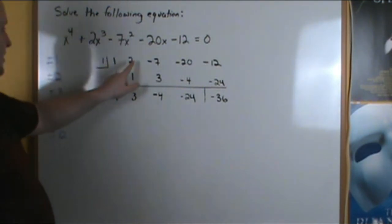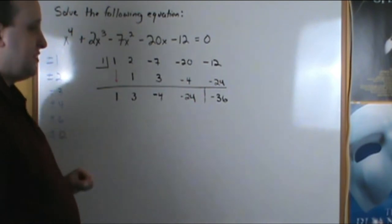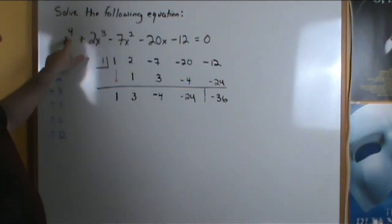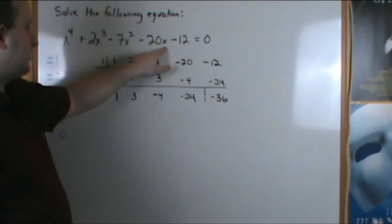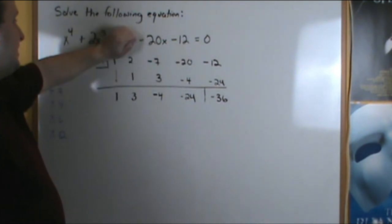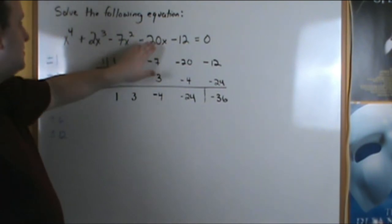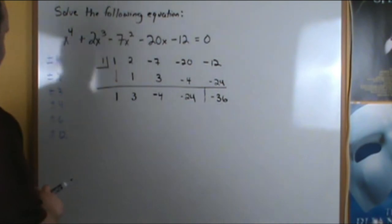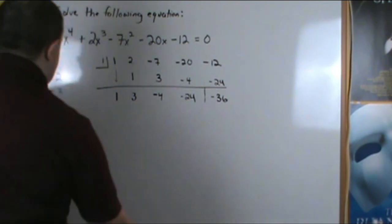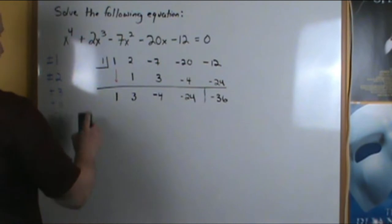Also, notice we didn't need to put any placeholders of 0 in there because we have degree 4, degree 3, degree 2, degree 1, and the constant term. If we didn't have, say, this minus 7x term, and we just went from plus 2x cubed to minus 20x, we would have to put a 0 where this 7 is. So since x equals 1 is not a solution, we can eliminate positive 1.